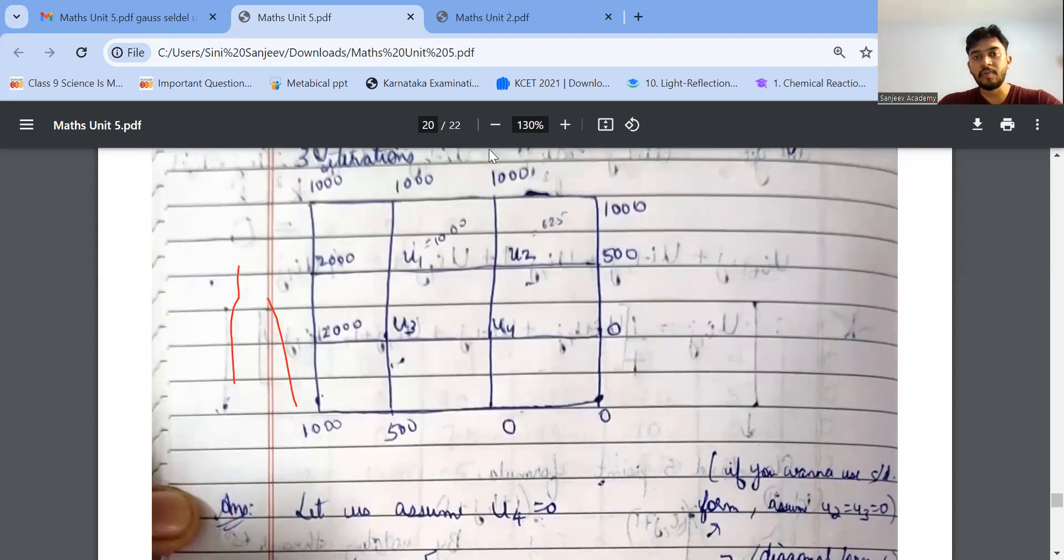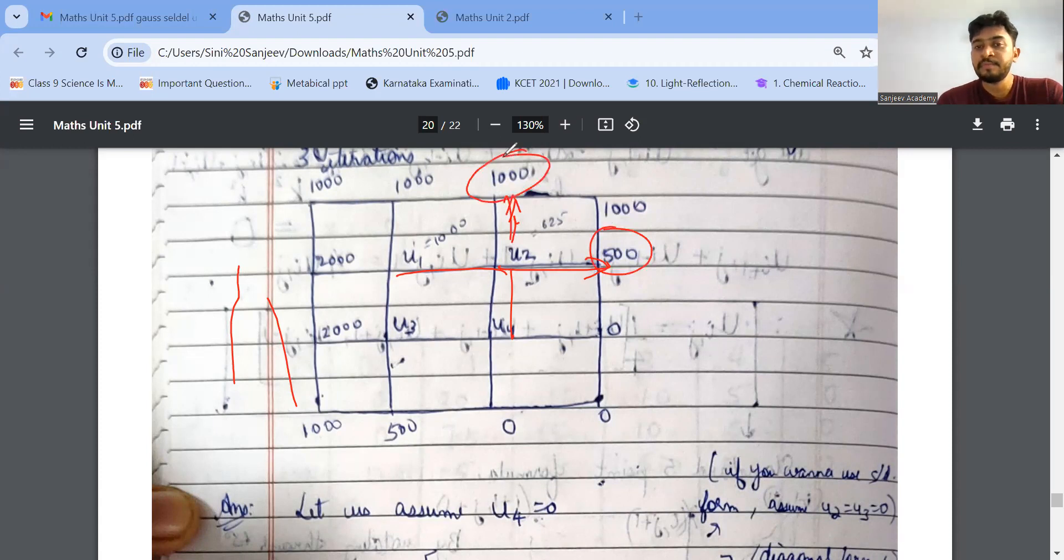Second thing is about U2, once I finish U1. So I told you there are two methods, one is my diagonal and second is my standard. Standard method is much more easier compared to our diagonal. U2, just put like this, the values. U2 right side is 500. So 500 plus, up is 1000. And U4 down, that is 0. Plus U1 value, just now I got 1000. So 1 by 4 into 1000 plus 1000 plus 1000 plus 500 plus 0. That's it. I'll be getting U2.